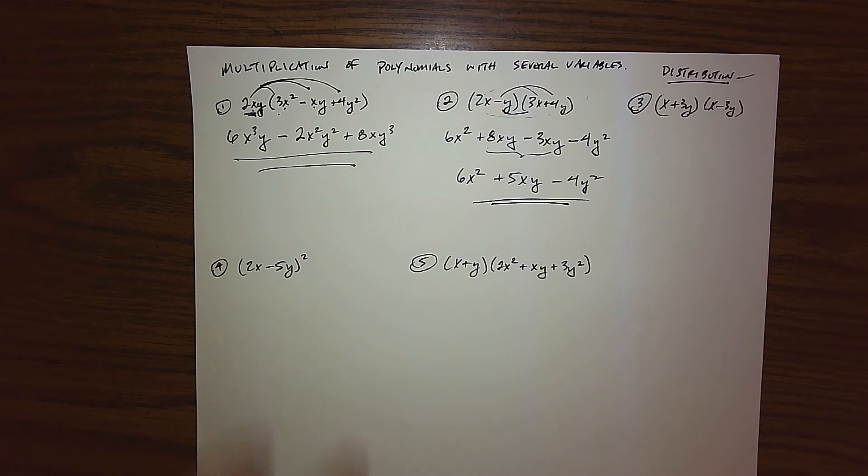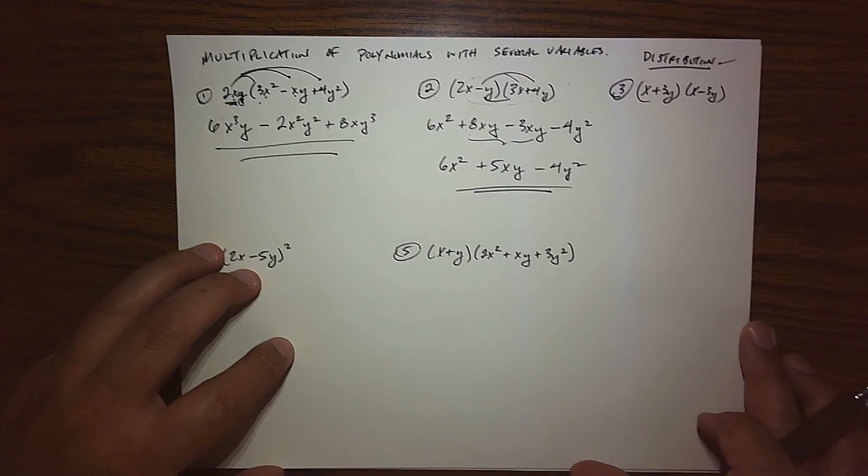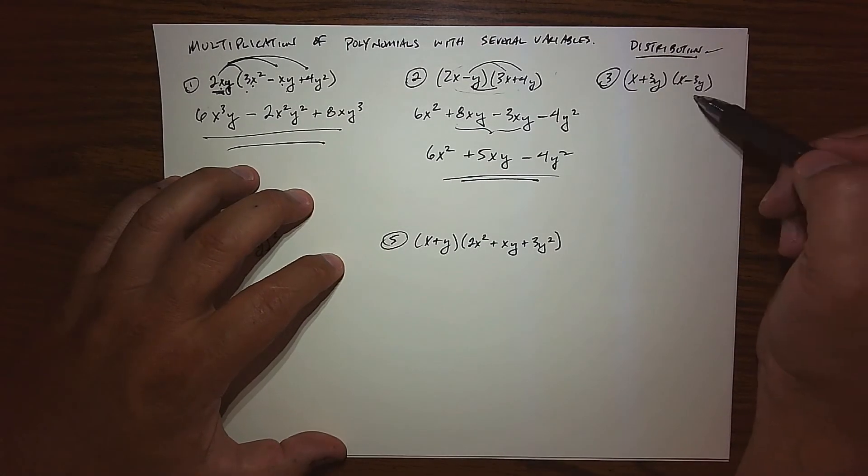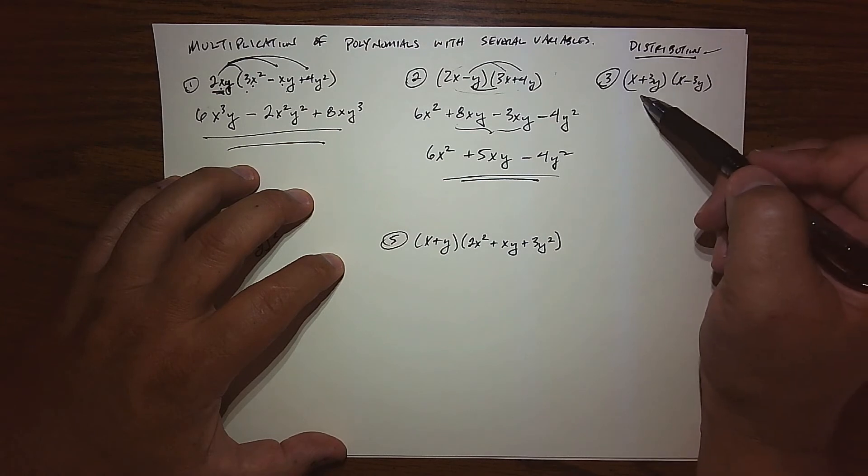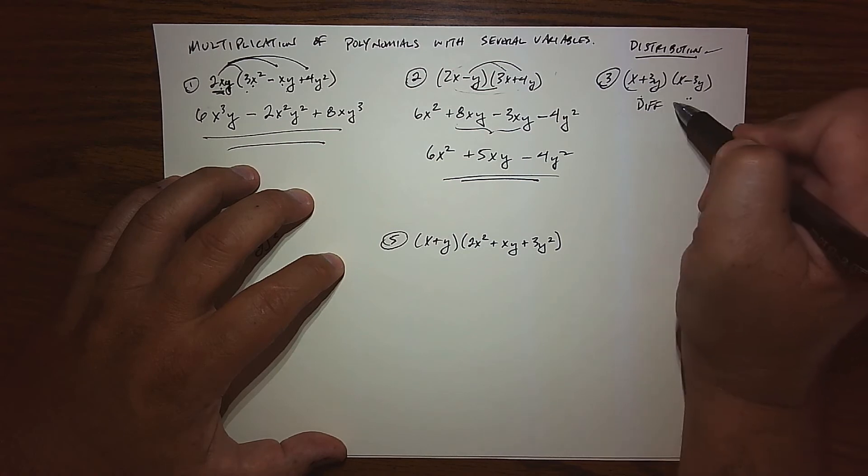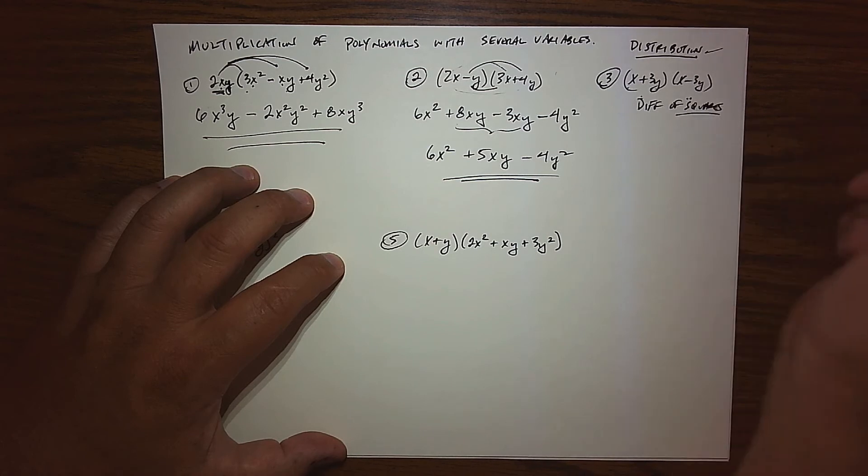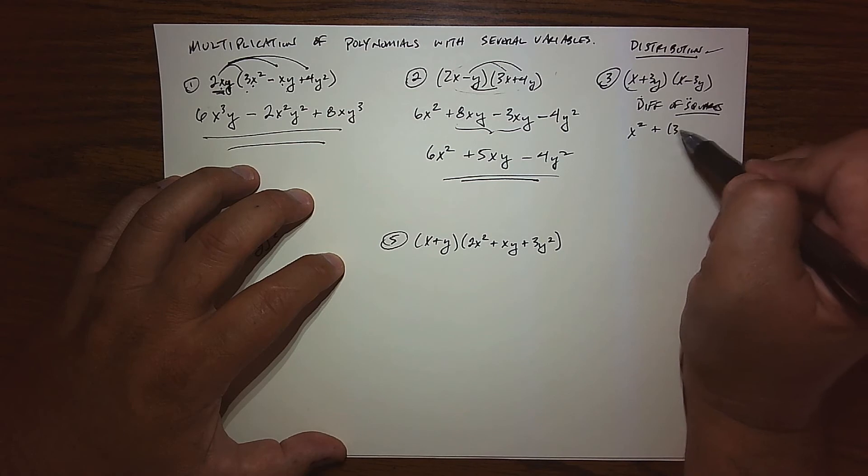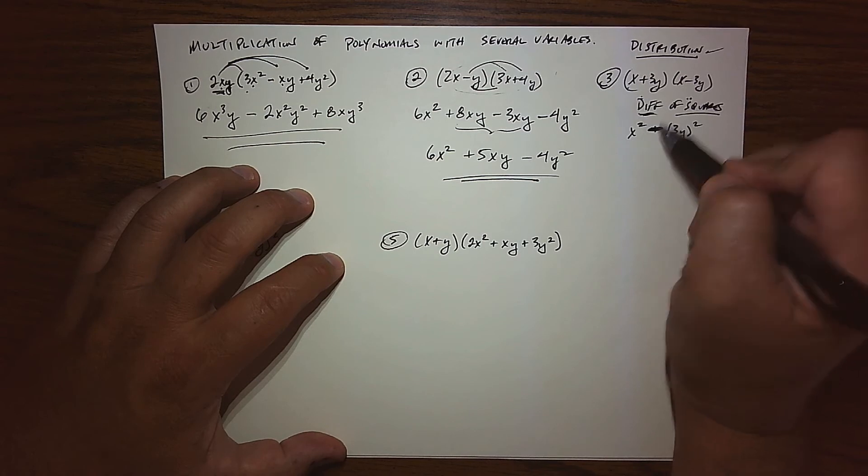So again, just multiplication, same stuff we've been doing, we just have another variable to track. Looking at my next one, I'm seeing a pattern right away. I have a binomial times a binomial. I have an addition and a subtraction, and I have the same terms. So the way I'm going to choose to do this is use my difference of squares pattern. Of course, if you don't want to use the difference of squares pattern, go ahead and FOIL it out. But if we use the difference of squares, it's the first term squared plus the last term squared. Oops. Minus. It's difference of squares.